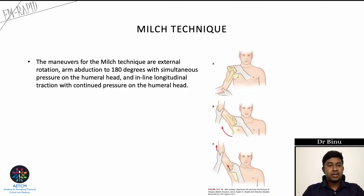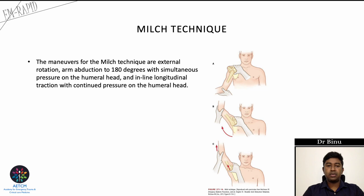In the Milch technique, the arm is abducted to 180 degrees with external rotation and simultaneous pressure over the humeral head. Inline longitudinal traction is applied with continuous pressure on the humeral head until the dislocation is reduced.